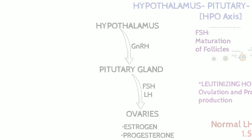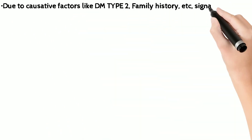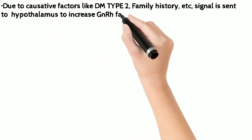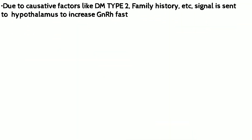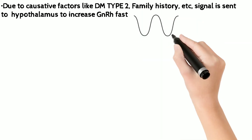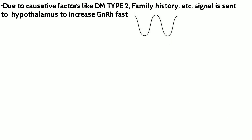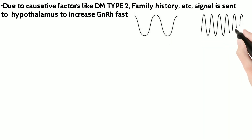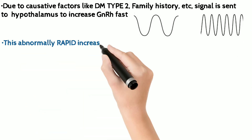But what happens in PCOS is that, because of reasons like diabetes mellitus type 2, the hypothalamus starts secreting GnRH in fast impulses. Due to this abnormal increase in GnRH secretion...